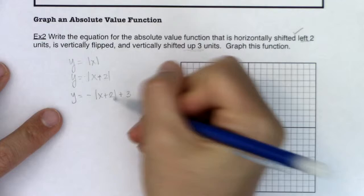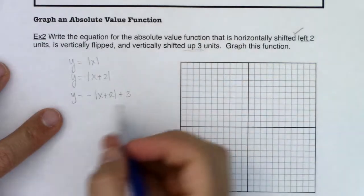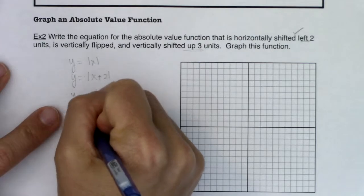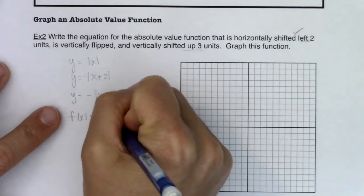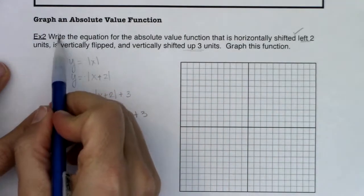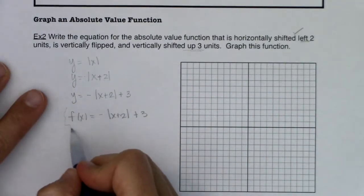And our grouping symbol here is the absolute values, right? So here becomes my function. So we're going to go f(x) equaling negative absolute value of x plus two plus three, right? And the first direction says, write the equation. Well, I did it.